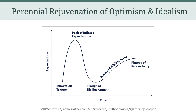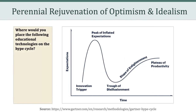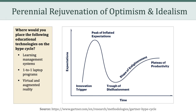I want to connect these five phases to Christo Sims' idea of the perennial rejuvenation of optimism and idealism. As educators, where would you place the following educational technologies on the hype cycle? Where would you put learning management systems? One-to-one laptop programs? Virtual and augmented reality? And finally, the brainwave trackers from Critical Reflection 6 — where do those fall on Gartner's hype cycle?